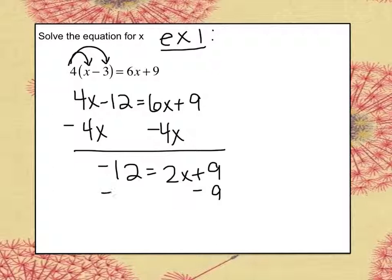Subtract 9 from both sides. Now I'll have negative 21 equals 2x. Divide both sides by 2, so x equals negative 21 over 2.